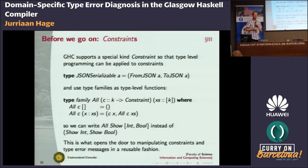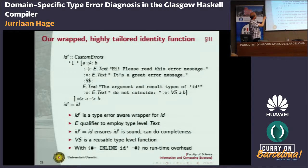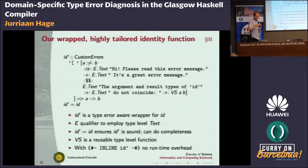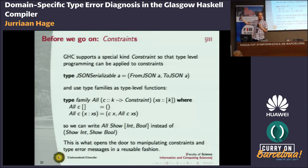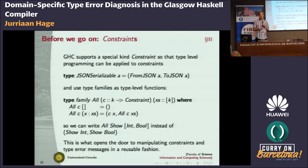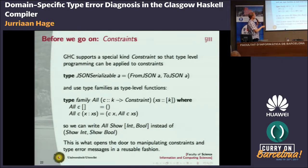What I'm actually doing most of the time is manipulating constraints. These are constraint-like things that live in a special kind introduced in GHC called the constraint kind, and we apply type-level programming to these constraints. You can already use this in Haskell: if you're lazy, you want Show Int, Show Bool, Show Blah... you can write a type family 'All' that maps Show over all types in a type-level list. This is the kind of thing we exploit. This opens the door to manipulating constraints and having type error messages in a reusable fashion.